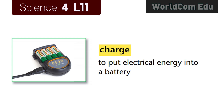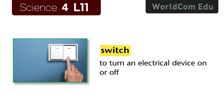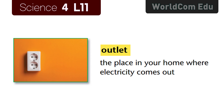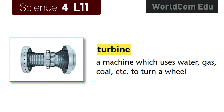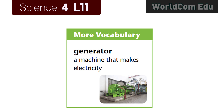Lesson 11: Exploring Electricity. Here are the key vocabulary words: 'charge' — to put electrical energy into a battery; 'plug' — to connect an electrical device to an electricity supply; 'switch' — to turn an electrical device on or off; 'outlet' — the place in your home where electricity comes out; 'turbine' — a machine which uses water, gas, coal, etc. to turn a wheel; 'power plant' — a building where electricity is made, a power station; 'generator' — a machine that makes electricity.